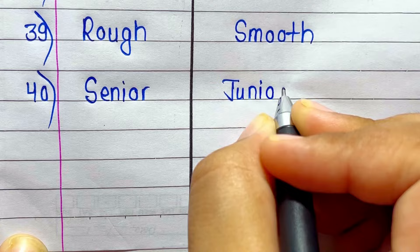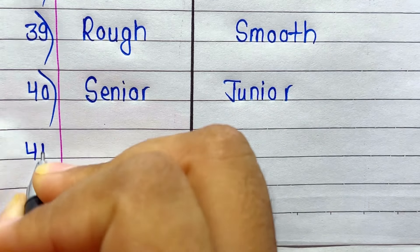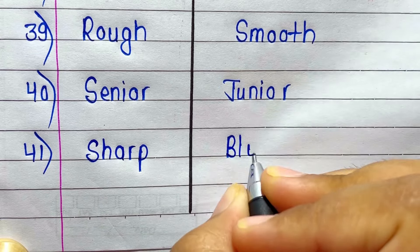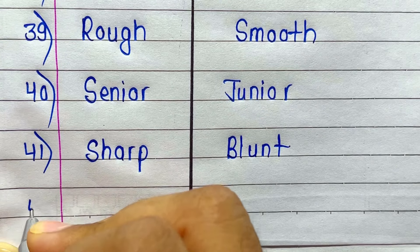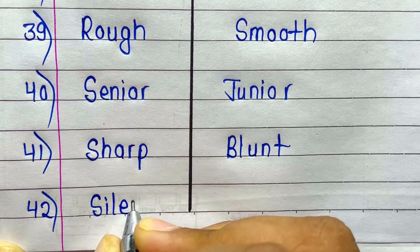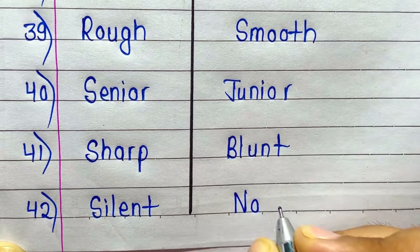Senior. Antonym of Senior is Junior. Sharp. Antonym of Sharp is Blunt. Silent. Antonym of Silent is Noisy.